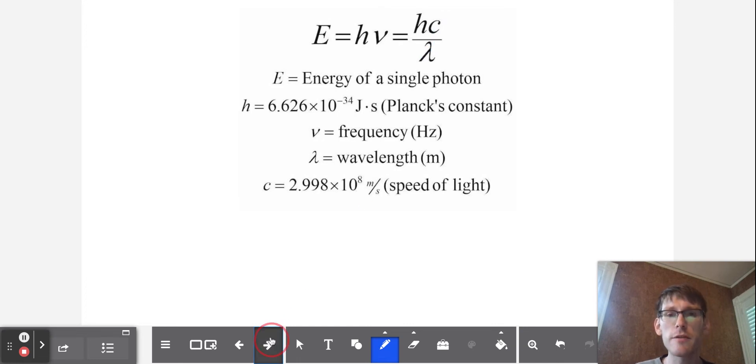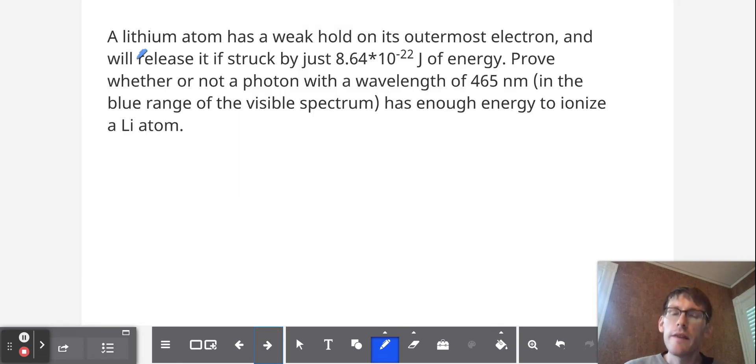So let's put this into a problem. A lithium atom has a very weak hold on its outermost electron, and it will release that outermost electron if it is struck by a photon having just 8.64 times 10 to the negative 22nd joules of energy. What we're going to do is prove whether or not a photon that's in the blue range of the visible spectrum at 465 nanometers has enough energy to ionize the lithium atom.